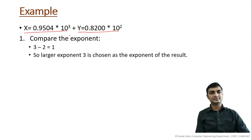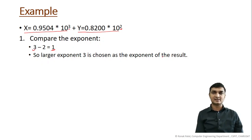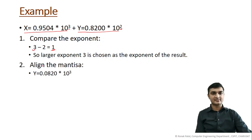The first step is to compare the exponents. The exponents here are 3 and 2. We compare them by subtracting: 3 minus 2 equals 1. The larger exponent, which is 3, is chosen as the exponent of the result. So in the result, the exponent will be 10 raised to the power 3.